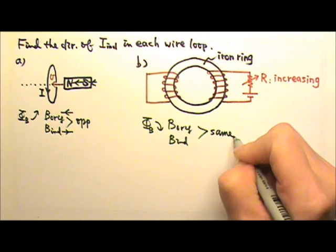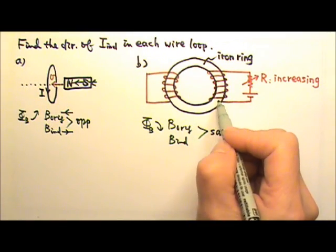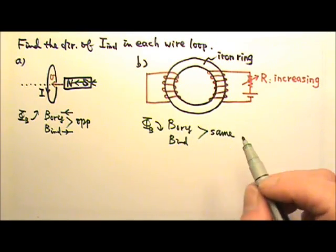That means the original magnetic field and induced current's magnetic field must be in the same direction. Now this one here, because of the iron ring, it's more complicated. Let's see.